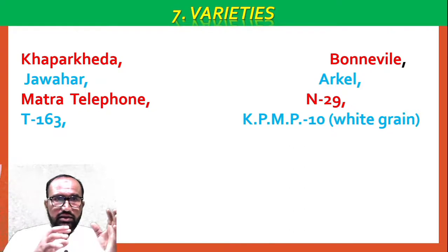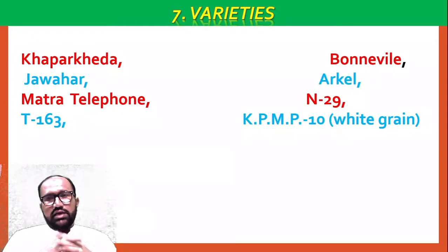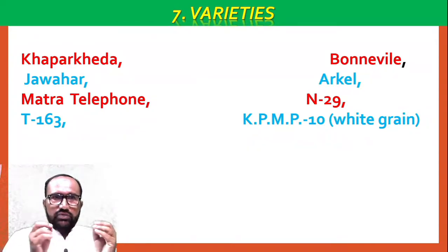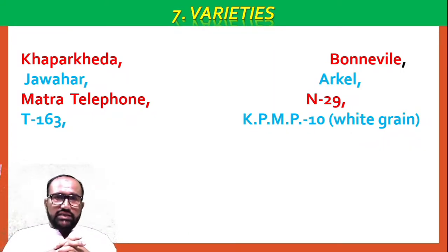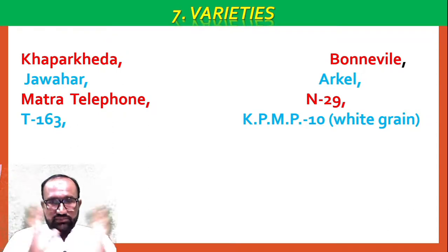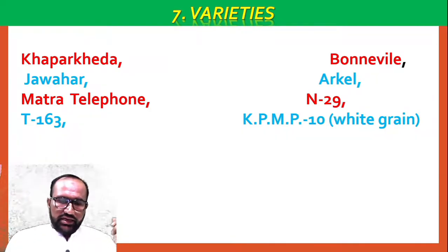Varieties: N29, T163, KPMP10 are wide green varieties. In tabular information, there are two varieties for minor crop: Bone Well, Jawahar, and Arcale.